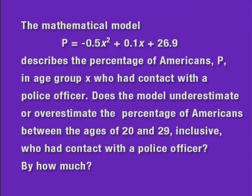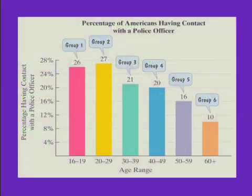So let's refer to the bar graph. Notice that if we're looking at ages 20 to 29 on the bar graph, that's going to be group 2. Note that the bar graph shows group 2 with 27 percent. So 27 percent would be the percentage of Americans in age group 2 who had contact with a police officer.